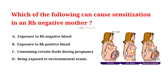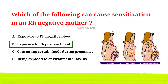Which of the following can cause sensitization in an Rh negative mother? A. Exposure to Rh negative blood. B. Exposure to Rh positive blood. C. Consuming certain foods during pregnancy. D. Being exposed to environmental toxins. And the correct answer is B: exposure to Rh positive blood.